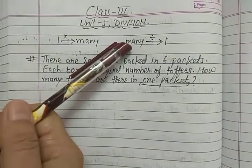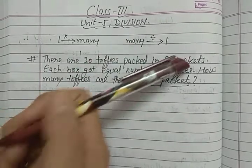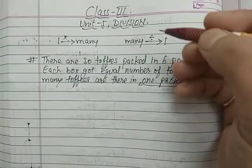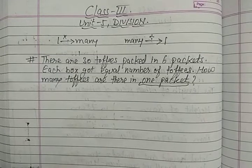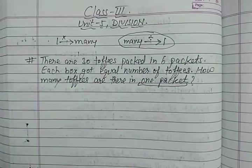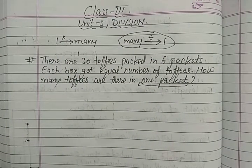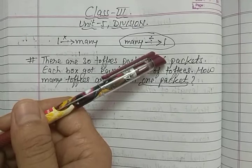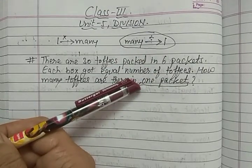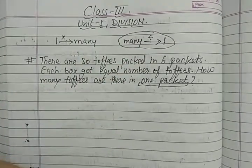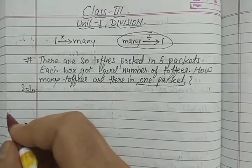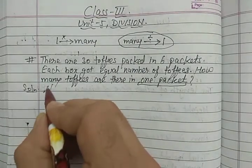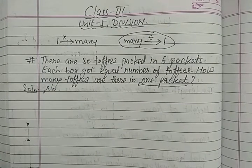So here, toffees in many packets are given — 6 packets ki aapko toffees di hoi hain — and you have to find out the toffees in one packet. I have already told you that jab aapko many things given hain aur aapko one ko find karna hai — zyada diya hoa hai aur one find karna hai — then you have to divide. 6 packets mein toffees given hain aur you have to find out the toffees in one packet. So many to one — so here we will divide.